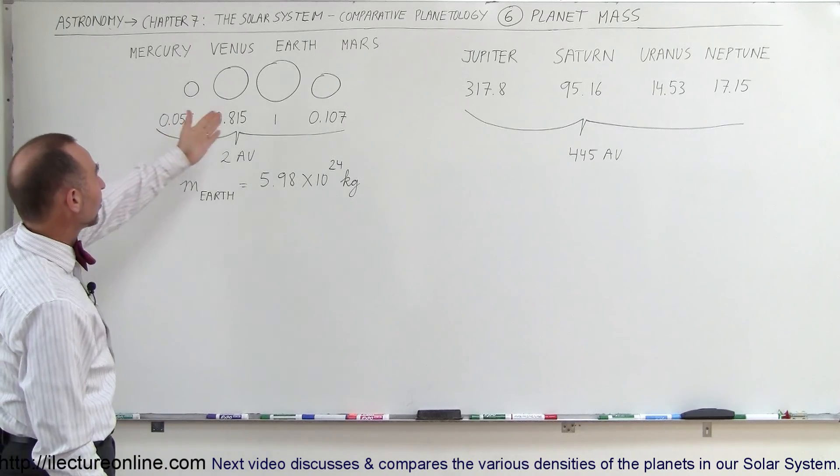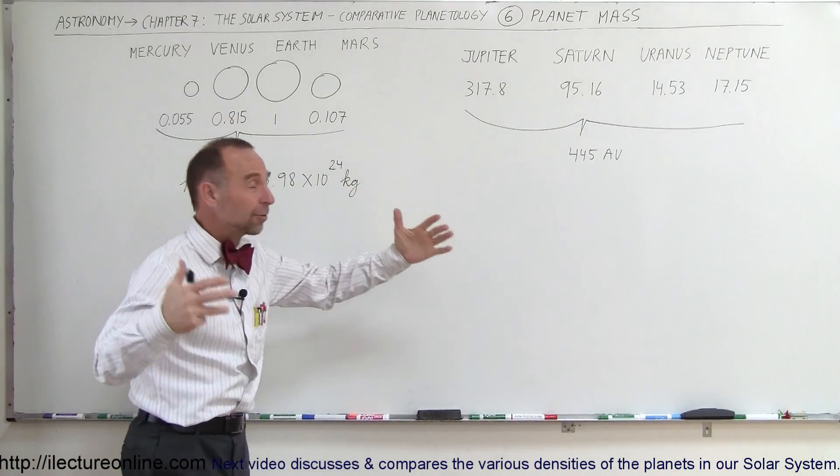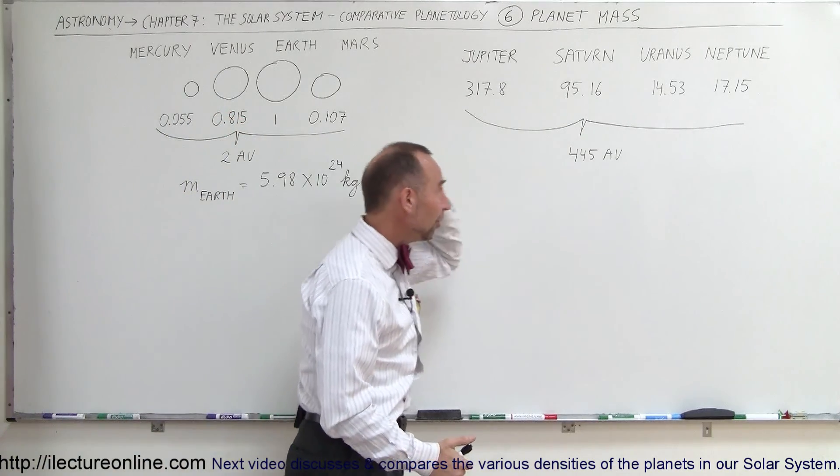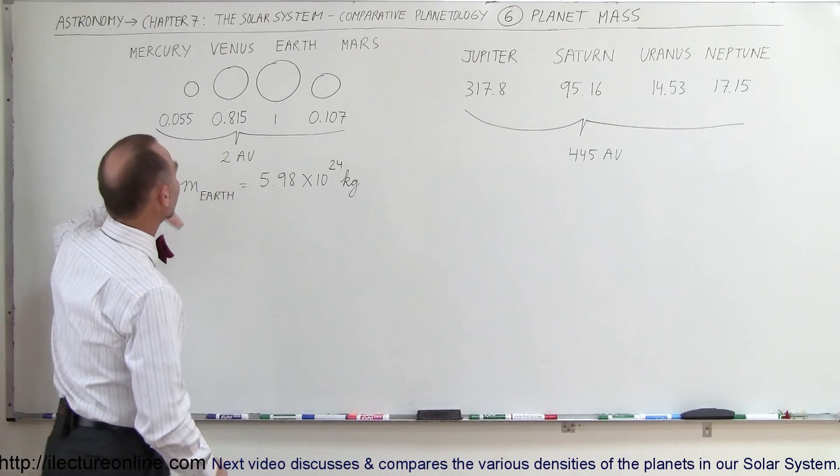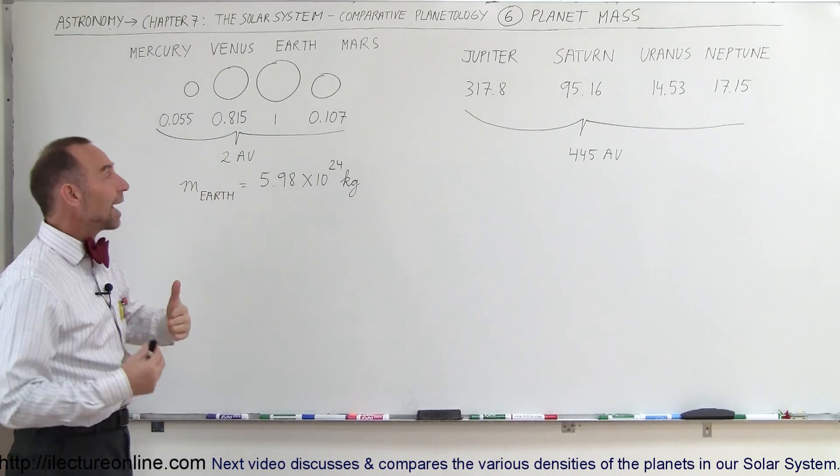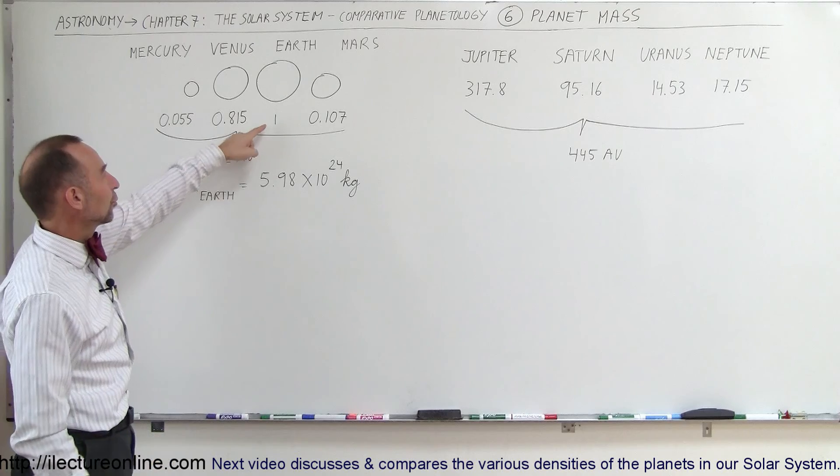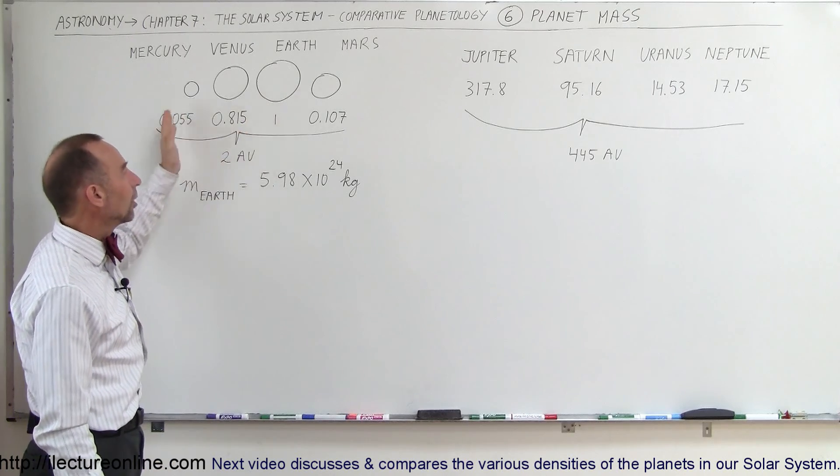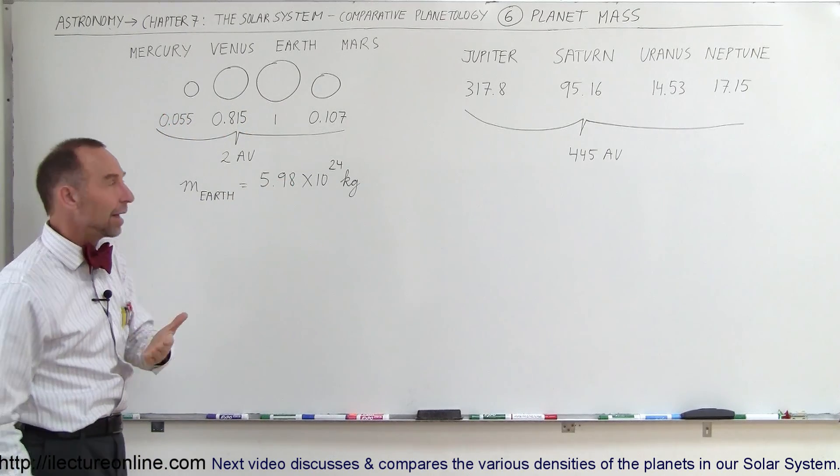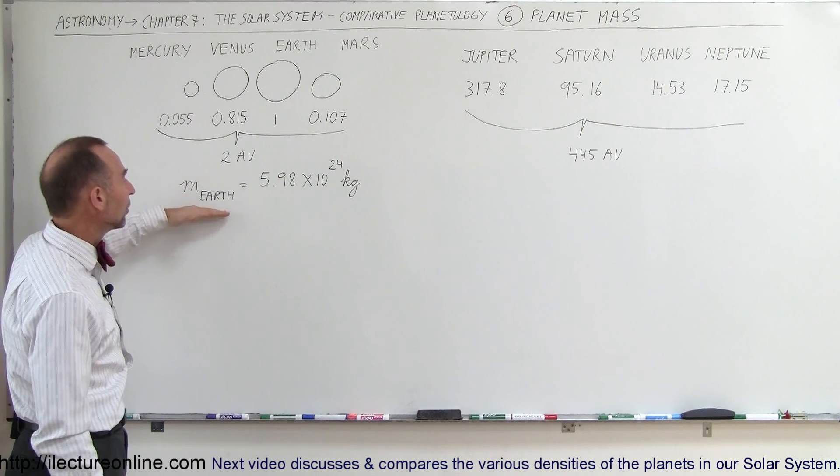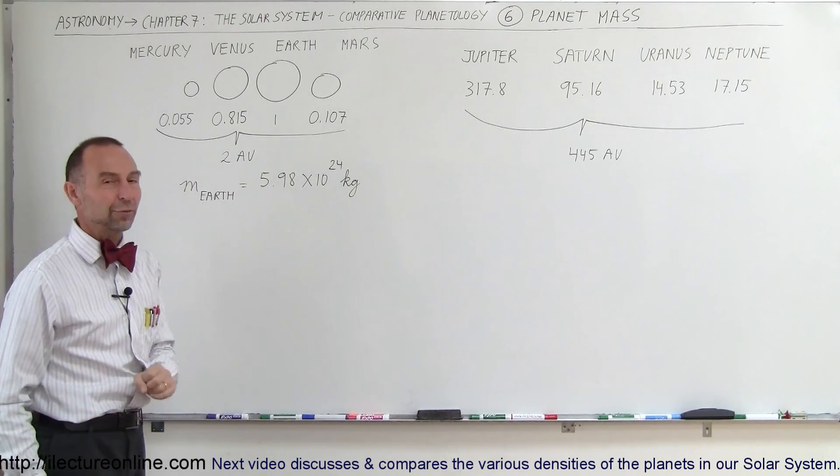Here are the four terrestrial planets, and in comparison, the gas planets, the Jovian planets, are a lot larger. But notice the mass of the planets. I've written it down in terms of the mass of the Earth. So if the mass of the Earth equals one, how large are the other planets in terms of mass? Remember that the mass of the Earth is about 6 times 10 to the 24 kilograms.